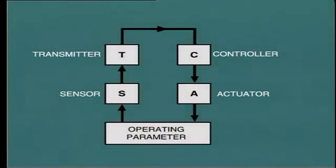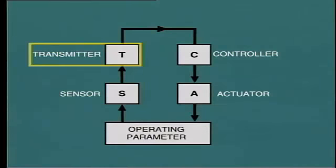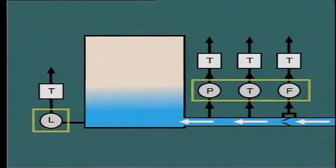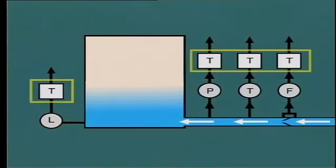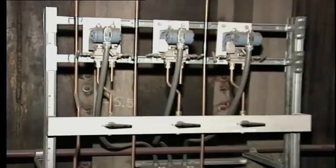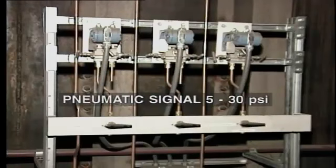This schematic shows the essential components of a control loop: the sensor, transmitter, controller, and actuator. The sensor measures the operating parameter being controlled, such as pressure, temperature, flow, or level. This information is then fed into the transmitter, which prepares the signal for transfer to the controller. Older installations still use compressed air as the signal medium, with pneumatic signal pressure typically varying between 5 and 30 psi depending upon the value to be transmitted.